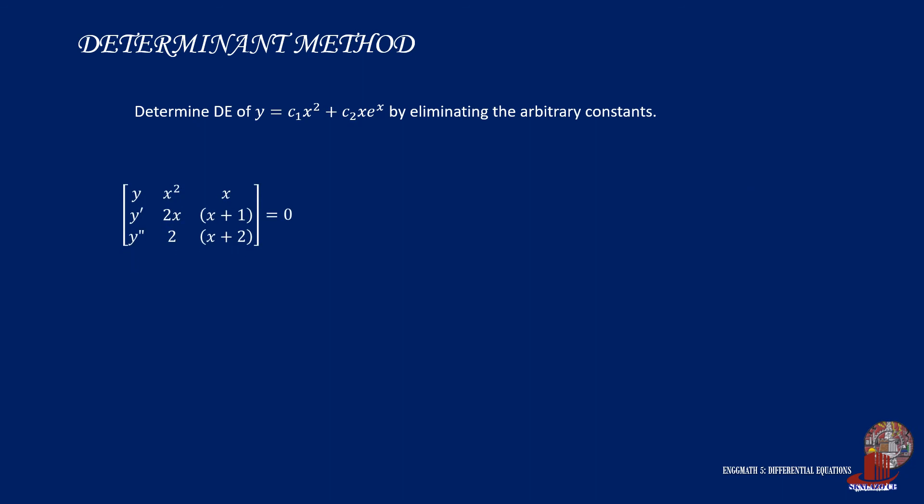So from the simplified matrix, solve for the determinant by Sauer's method. Take the positives, which would be y times 2x times x plus 2, plus x squared times x plus 1 times y double prime, plus x times 2 times y prime. Then the negatives, which would be y double prime times 2x times x, x squared times y prime times x plus 2, and y times 2 times x plus 1.